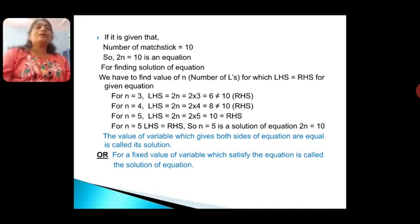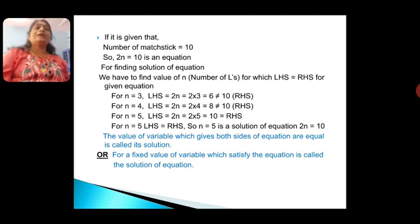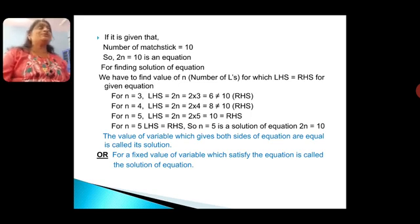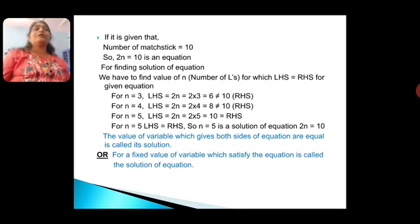For N = 3, LHS = 2N = 2 × 3 = 6, which is not equal to 10 (RHS). If we take N = 4, then LHS = 2N = 2 × 4 = 8, which is again not equal to 10 (RHS). If we take N = 5, then LHS = 2N = 2 × 5 = 10, which equals RHS. For N = 5, LHS equals RHS, so N = 5 is the solution of the given equation 2N = 10.